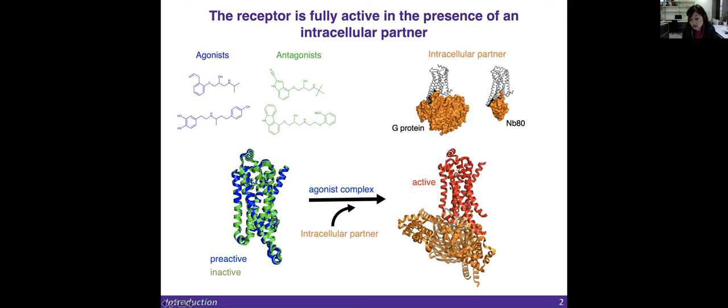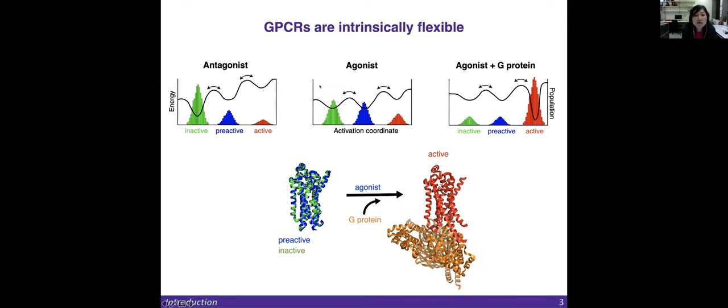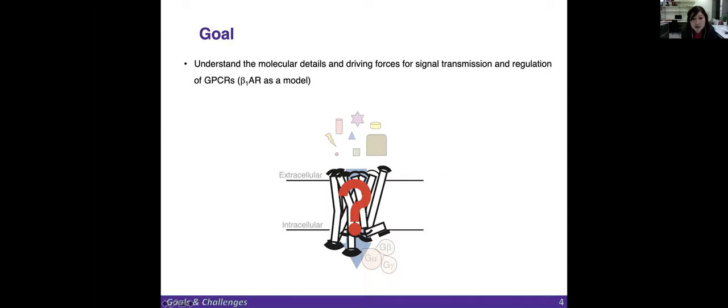GPCRs can only be fully active in the presence of an intracellular partner, which is a G-protein or a G-protein-mimicking nanobody. And this leads to a fully active conformation. Basically the difference between the pre-active and the active state is a swing-out motion of these two helices here. By just looking at those structures, it's not clear how this activation happens.